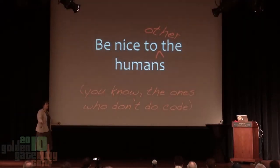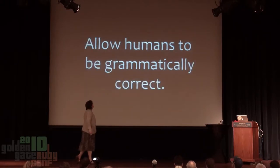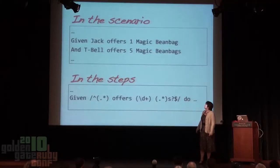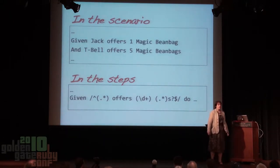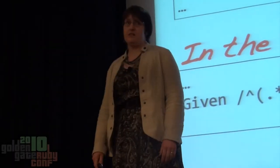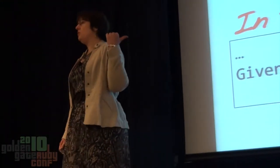That's about organizing long tests, but let's go back to some simpler ways of being nice to humans — remember this whole talk is about being nice to people. One of the ways we can be nice to humans is to allow them to speak grammatically: 'Given Jack offers one magic bean bag and T-Bell offers five magic bean bags.' If we are too literal in our steps it won't allow for natural language like that, and then we're telling our product owners 'yes we want you to say... given Jack offers one magic bean bags' — and they look at us like really?